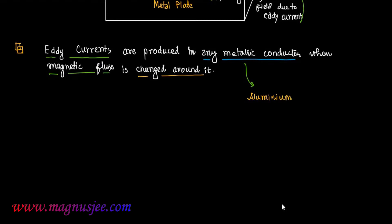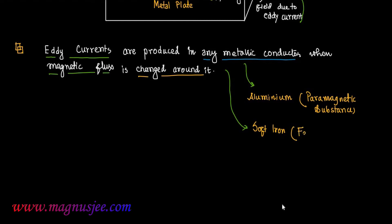Here, metallic conductor means — for example, aluminum, which is a paramagnetic substance, and also soft iron, which is a ferromagnetic substance, are examples of metallic conductors through which eddy currents flow.